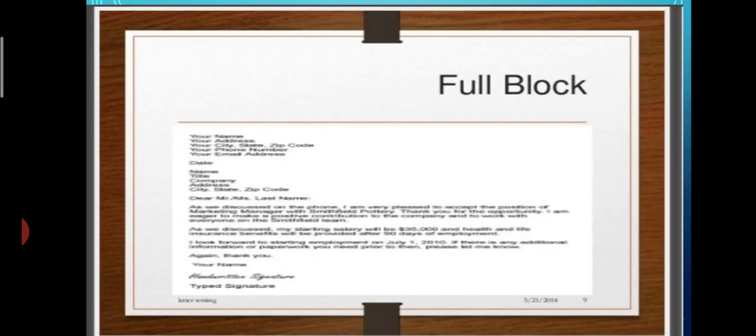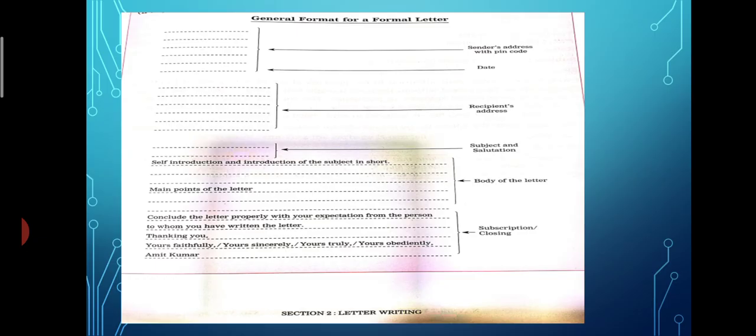Now this is a full block letter. Though the print is not very clear, you can see everything is aligned towards the left-hand side. Initially it was on the right-hand side, but now we have to follow this format that you have to write everything on the left-hand side. I have given the format in the next slide, so we will see what it is. This is a full block format.